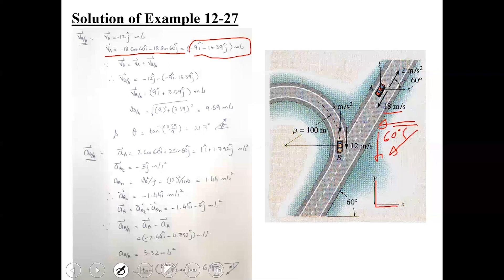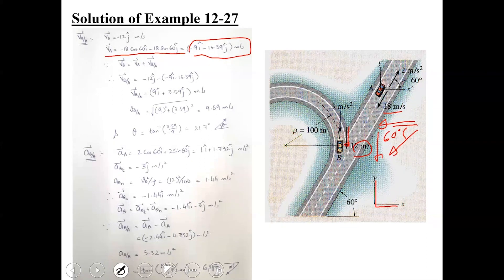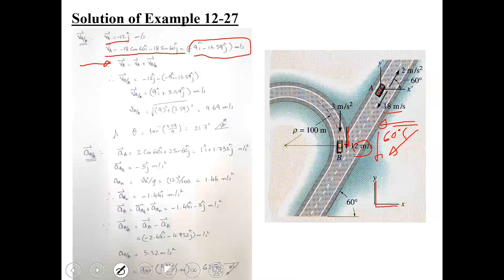As for the velocity of car B, although it is travelling along a curved path, at this instant its velocity is directed towards the negative y-axis. So we write VB equal to minus 12j. Applying the relative velocity equation — VBA equals VB minus VA — and performing the vector subtraction, VBA comes out to be 9i plus 3.59j. The magnitude and direction are as shown on the slide.